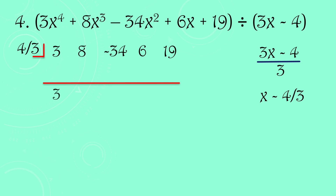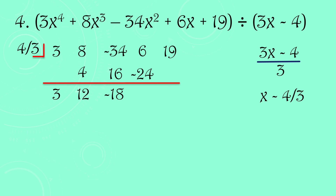Bring down 3, then multiply and add: 3 × (4/3) = 4, add to 8 → 12. Then 12 × (4/3) = 16, add to −34 → −18. Then −18 × (4/3) = −24, add to 6 → −18. Then −18 × (4/3) = −24, add to 19 → −5. So the remainder for number 4 is negative 5.